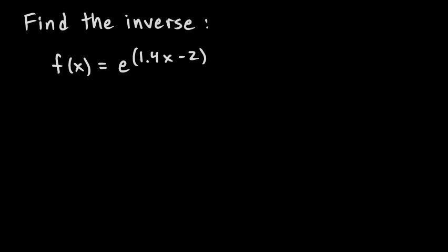We're told to find the inverse of the following function: f of x equals e to the power of 1.4x minus 2. We'll do this with the standard technique of finding the inverse. We rewrite the function with y-equals notation: y equals e to the power of 1.4x minus 2. All we've done is replace the function notation with the y notation.